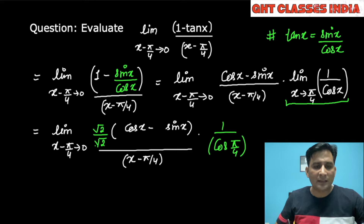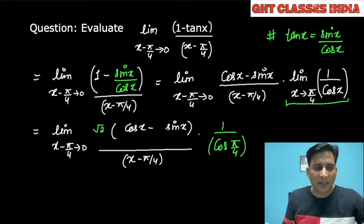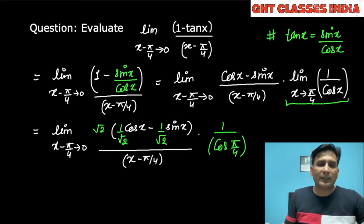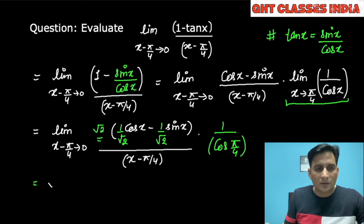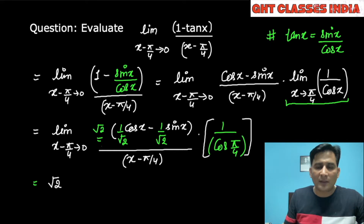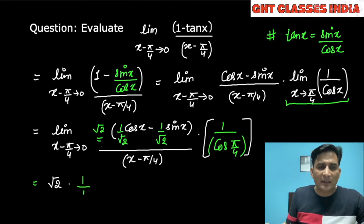I am shifting root 2 inside the brackets, so it becomes 1 by root 2 and 1 by root 2 inside. Then I shift root 2 outside the limit because it is a constant quantity. Similarly, 1 upon cos pi by 4 is also constant and is shifted outside. Since cos pi by 4 equals 1 by root 2, this term becomes root 2.